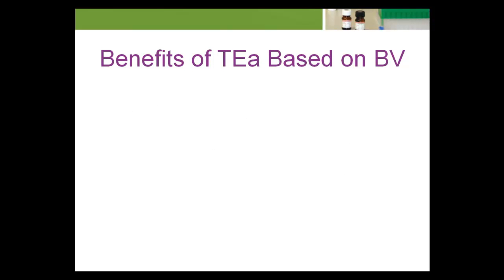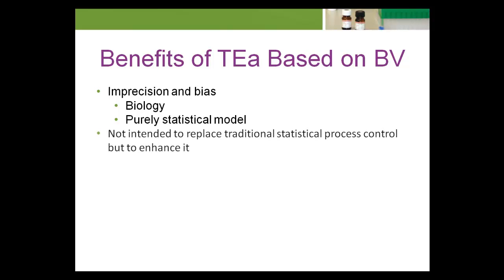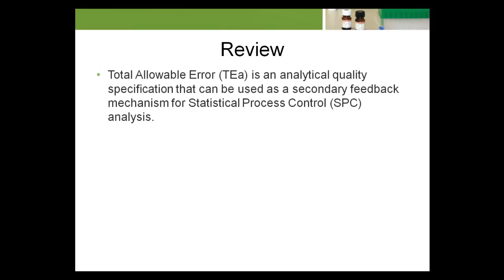The use of biological variation data provides a logical strategy for the laboratory to define and limit how much imprecision and bias are allowable based on biology, and not, as it's usually done today, on a purely statistical model. This strategy is never intended to replace traditional statistical process control, but to enhance it. Let's review what we've learned about analytical variation. Total Allowable Error is an analytical quality specification that can be used as a secondary feedback mechanism for statistical process control, SPC analysis.